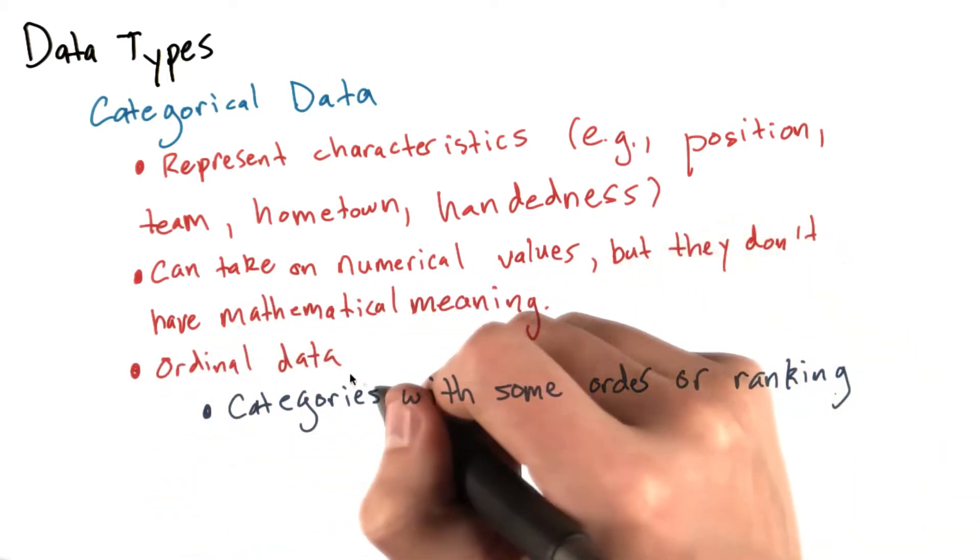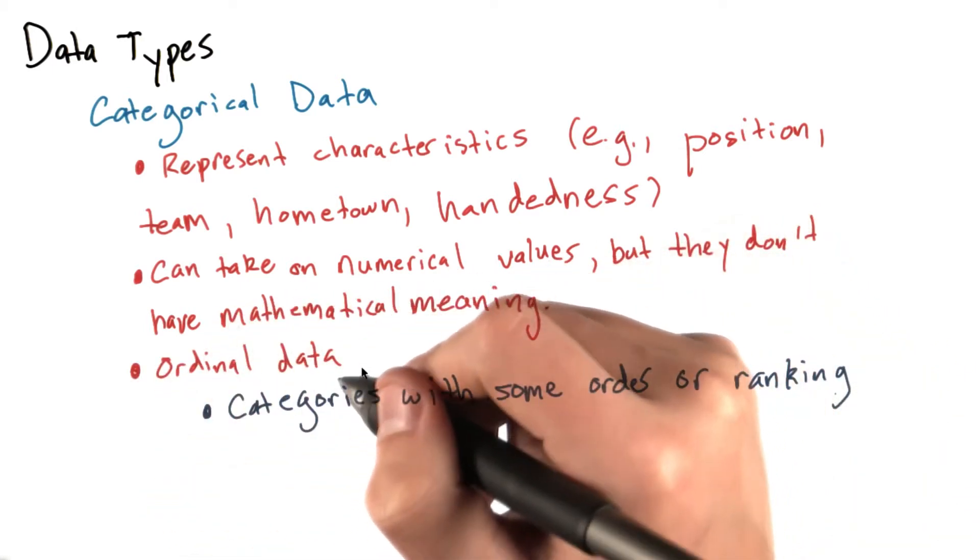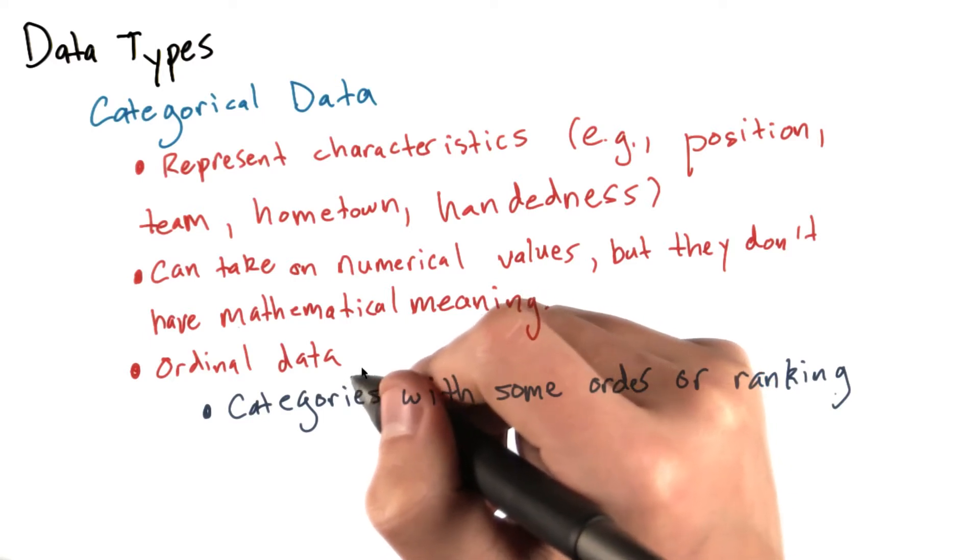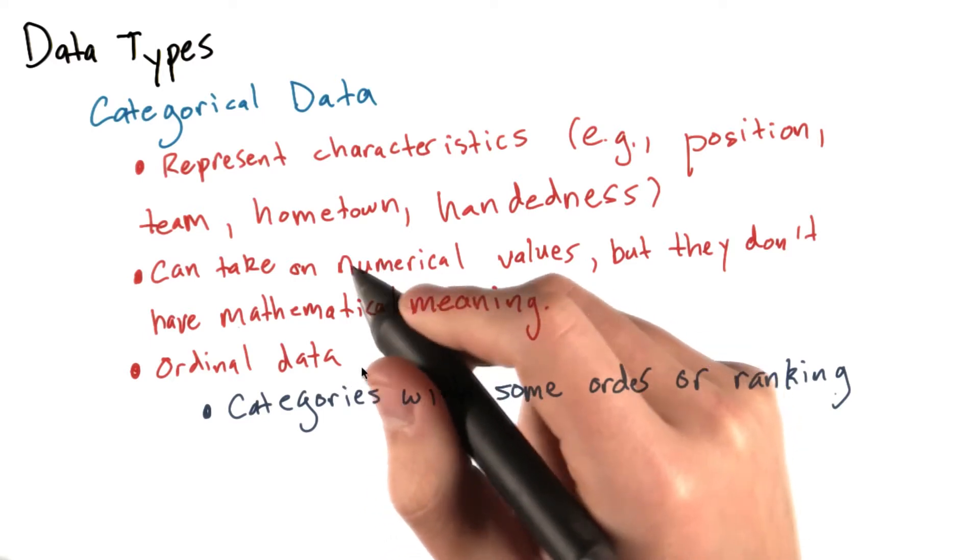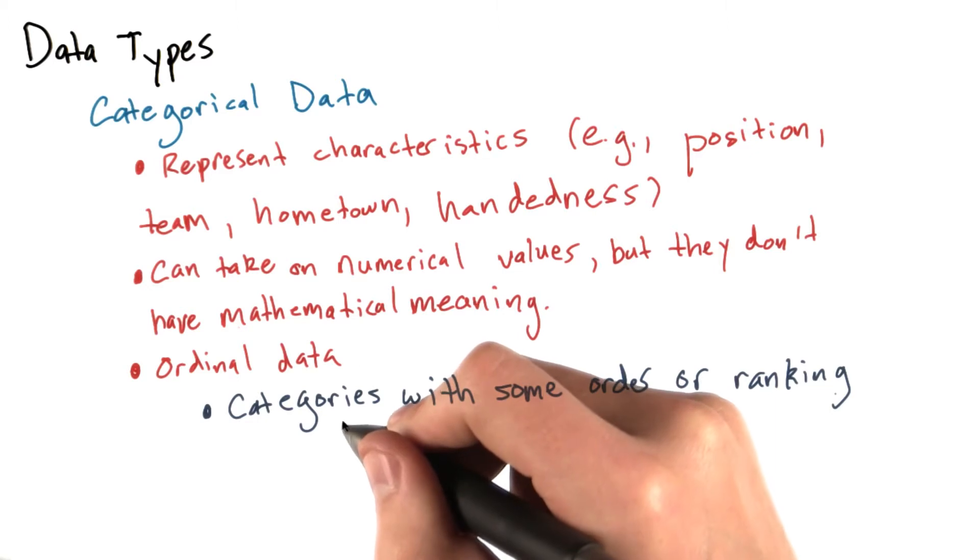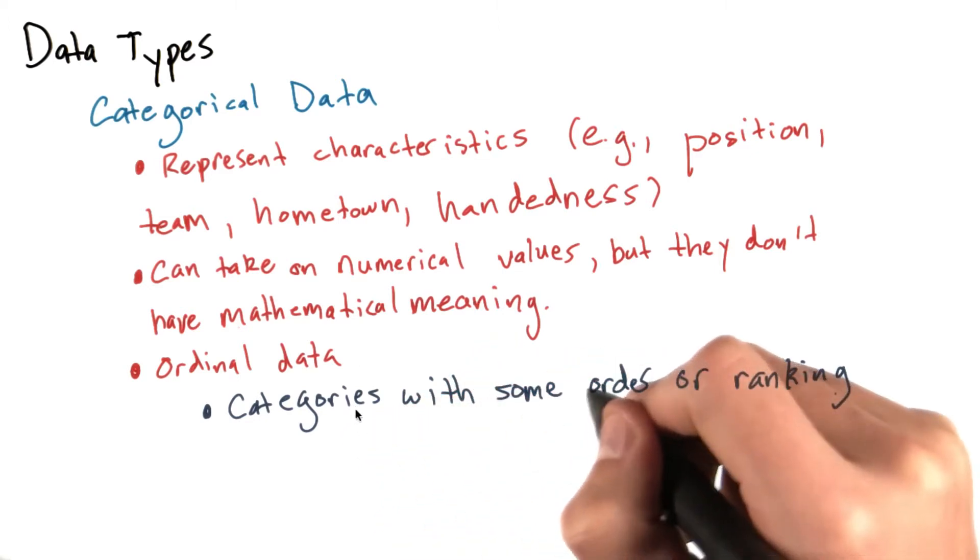There's also something called ordinal data, which in some sense is a mix of numerical and categorical data. In ordinal data, the data still falls into categories, but those categories have some order or ranking.